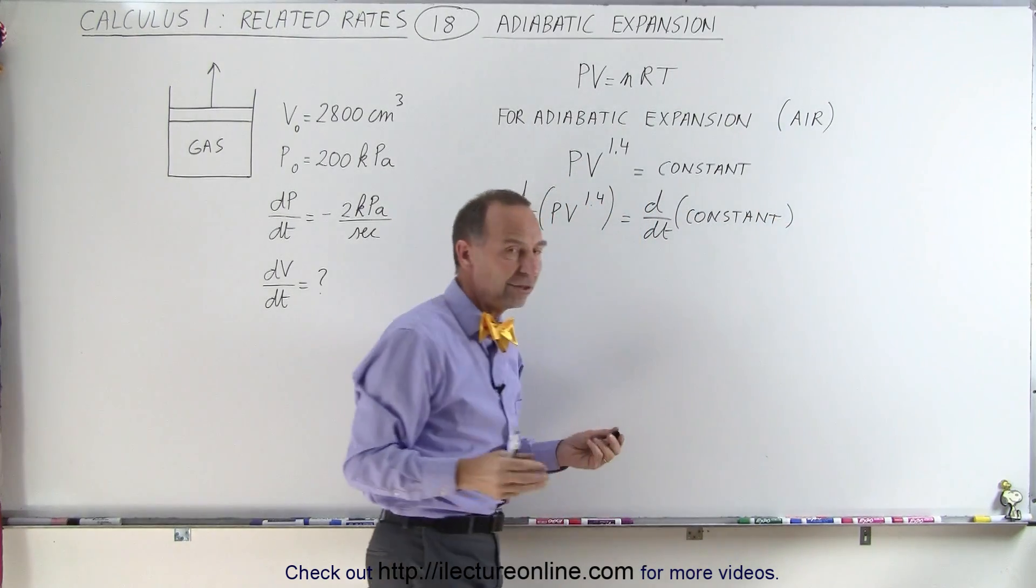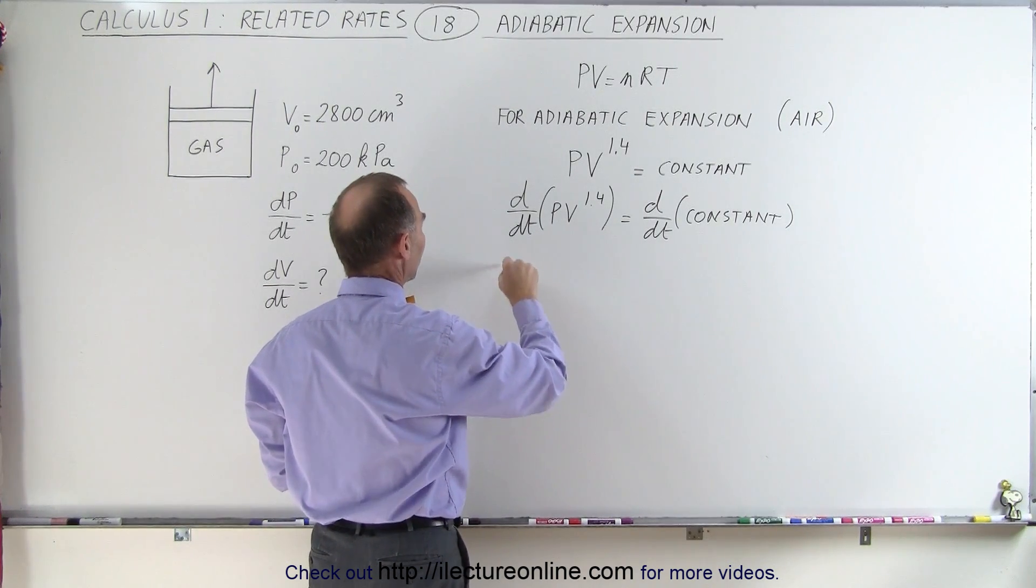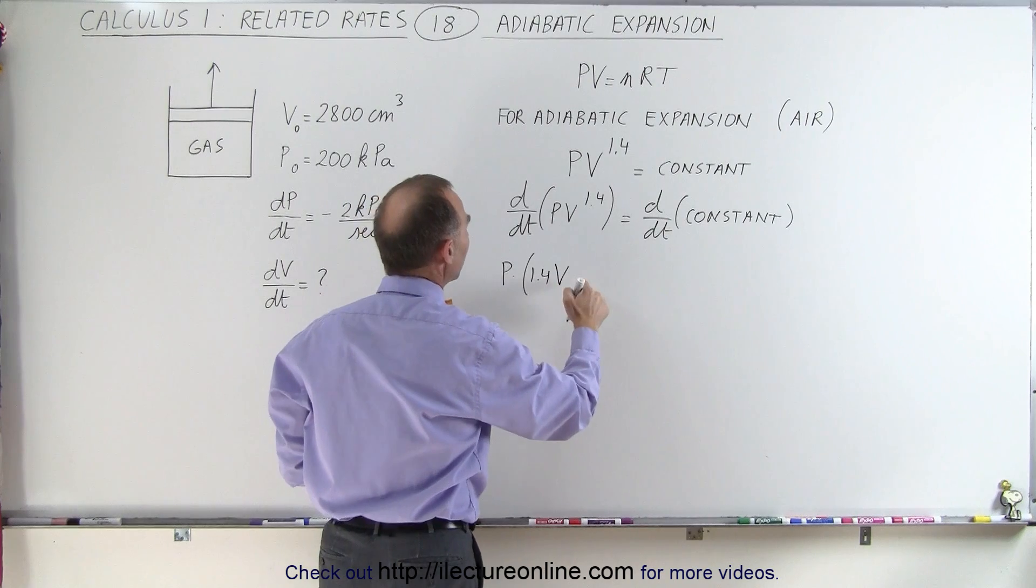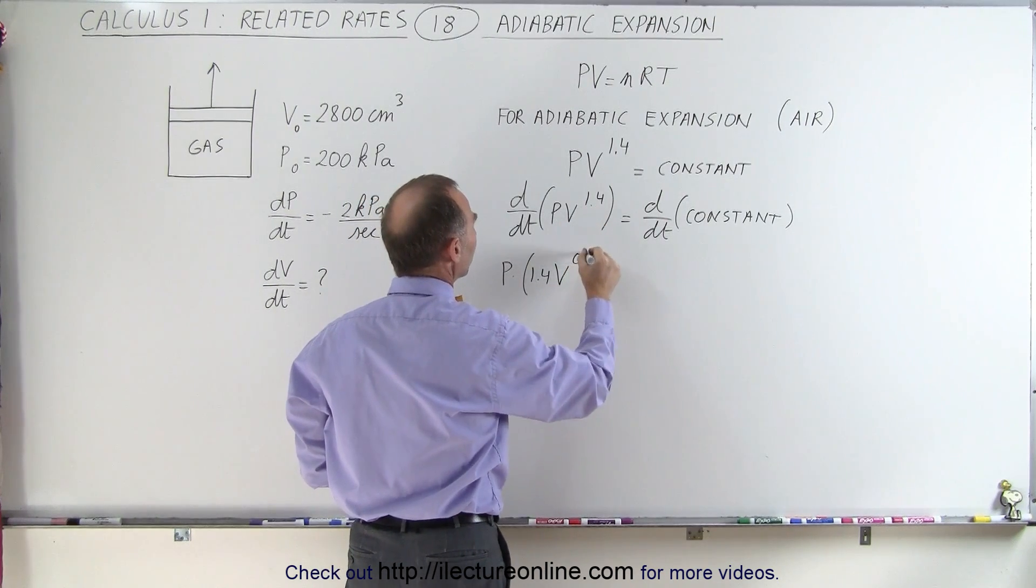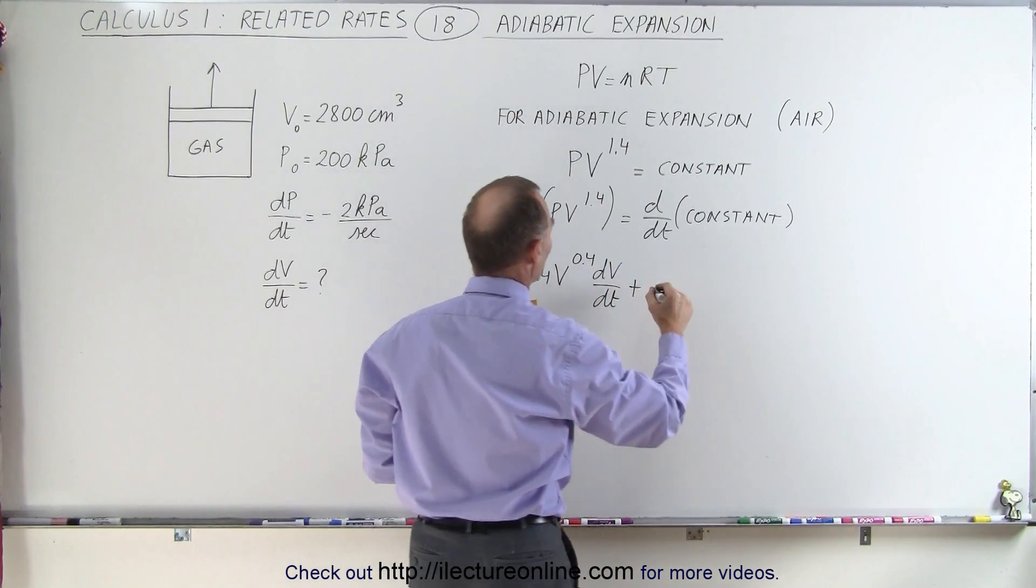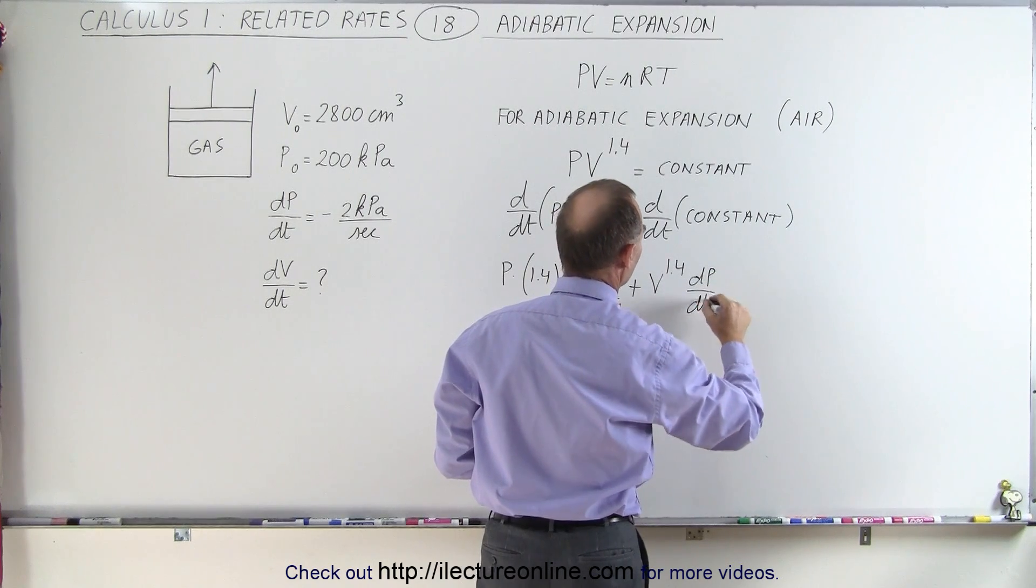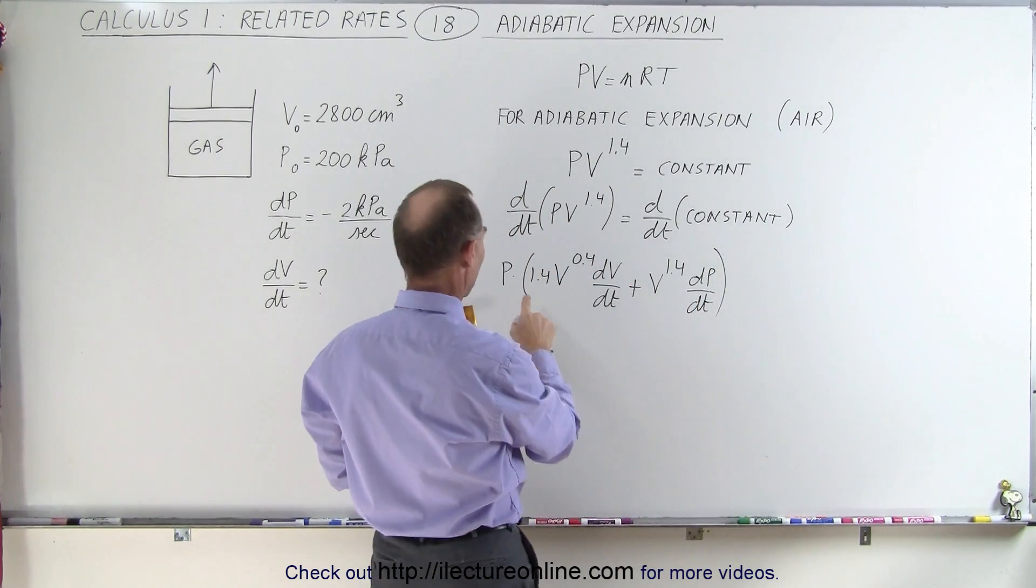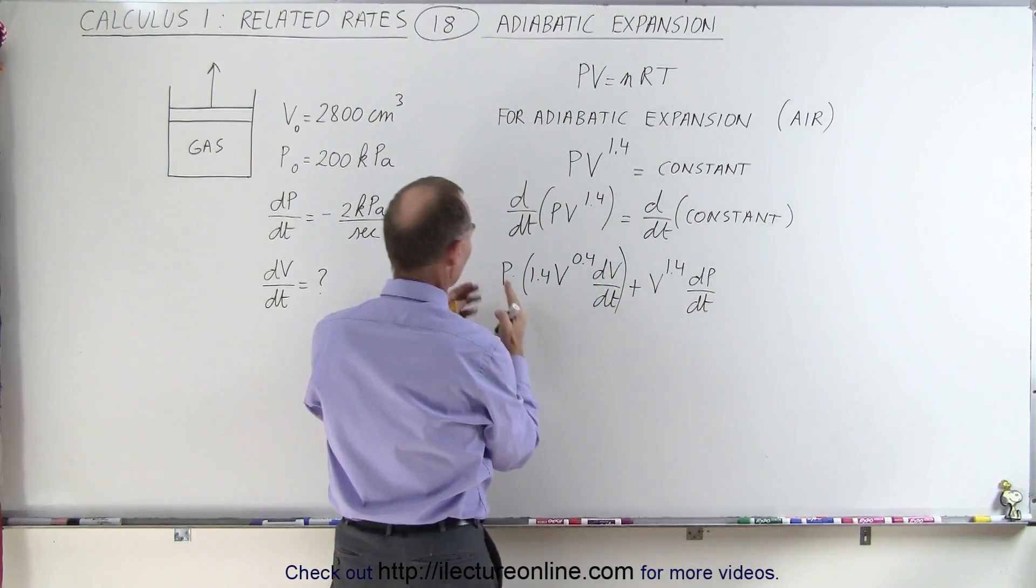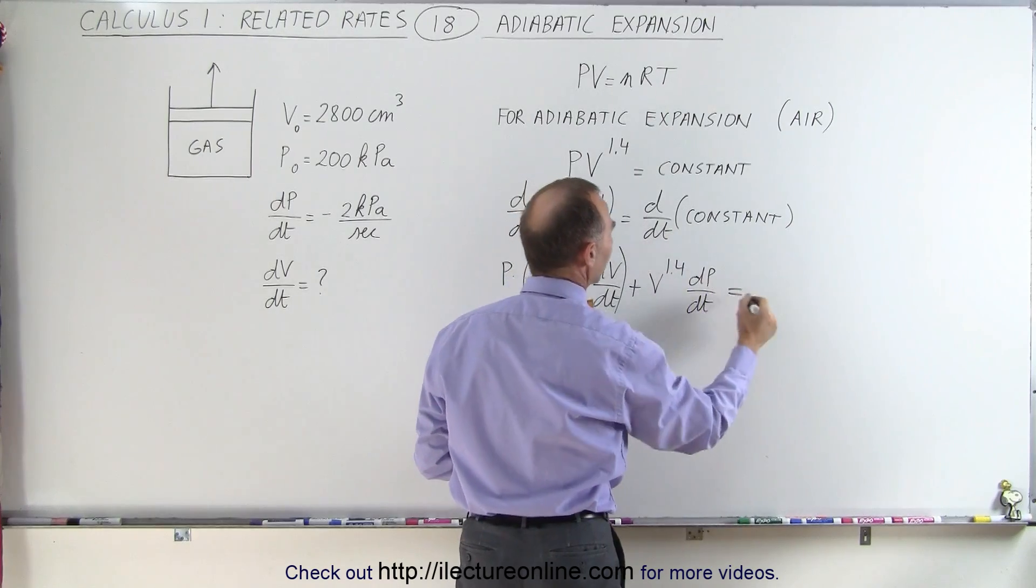Of course the derivative of a constant is zero, so the right side will be zero. But what about the left side? On the left side we have a product, so we take the first times the derivative of the second, which means 1.4 times V to the 0.4 power times dV/dt, plus the second which is V to the 1.4 power times the derivative of the first which would be dP/dt. It's the first times the derivative of the second plus the second times the derivative of the first equals the derivative of a constant, which is zero.